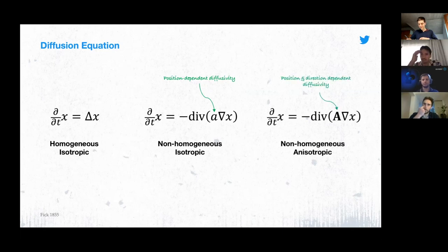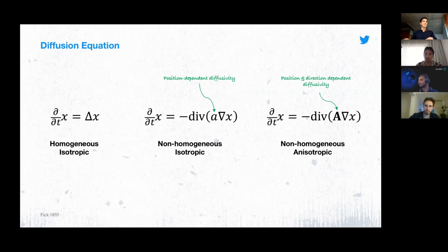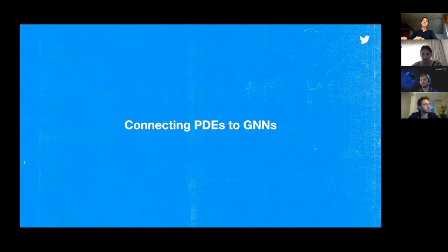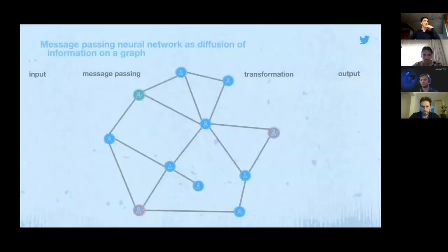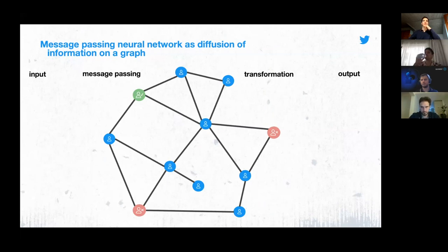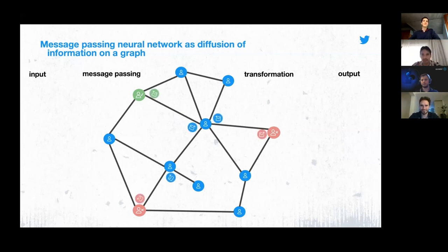Even more interesting — and this is something we're hoping to deliver in the future — is anisotropic diffusion, where not only does diffusivity change in space but the diffusion speed is different depending on which direction you're going. The vast majority of graph neural networks today are message passing GNNs, and message passing is just diffusion under the hood. If each node sends a function of its features to all its neighbors and you aggregate those incoming messages, then depending on that aggregation function — your diffusivity — that is nothing other than discrete diffusion.